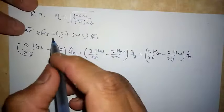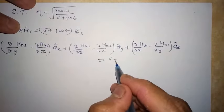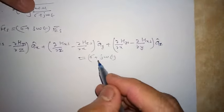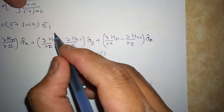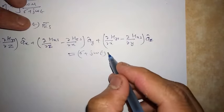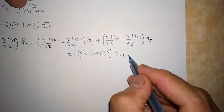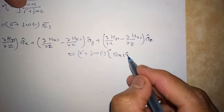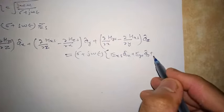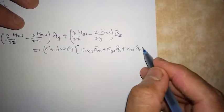On the right-hand side we have (σ + jωε) multiplied by the Es field. This Es field will have three components: Exs·âx + Eys·ây + Ezs·âz.